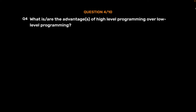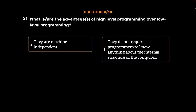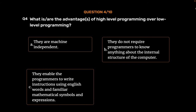Question No. 4. What are the advantages of high-level programming over low-level programming? Option A: They are machine-independent. Option B: They do not require programmers to know anything about the internal structure of the computer. Option C: They enable the programmers to write instructions using English words and familiar mathematical symbols and expressions. Option D: All of these. The correct answer is Option D: All of these.